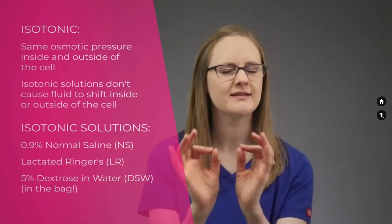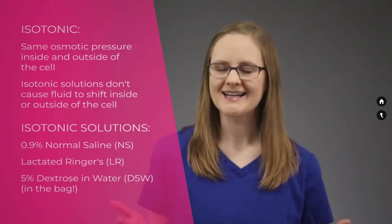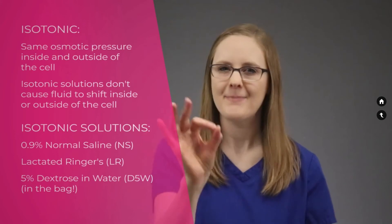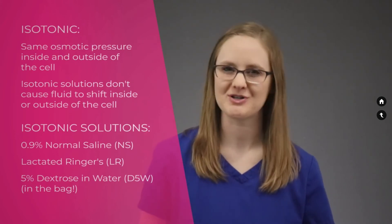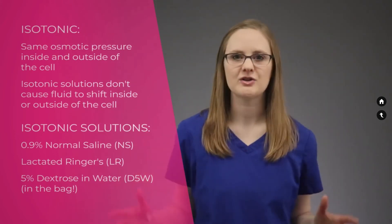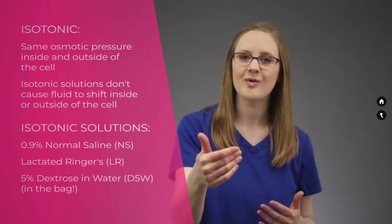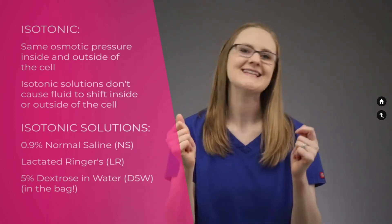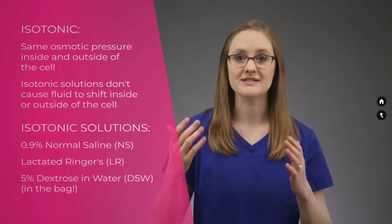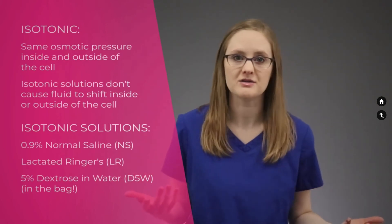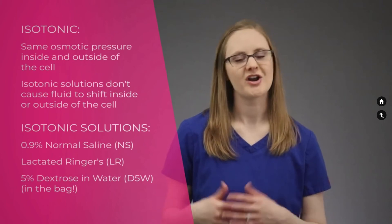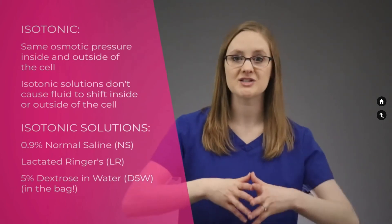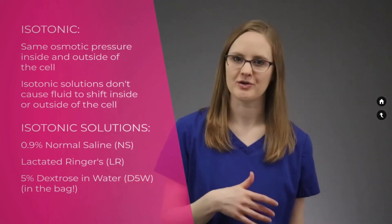D5W can be a little tricky to remember because technically 5% dextrose in water is isotonic when it's in the bag, but when it's in the body, it's hypotonic. D5W has a lot of glucose in it, and when it goes into the body, the body quickly uses up that glucose, removing those particles and leaving more water than particles. So when 5% dextrose in water is given, it's isotonic in the bag but hypotonic in the body.